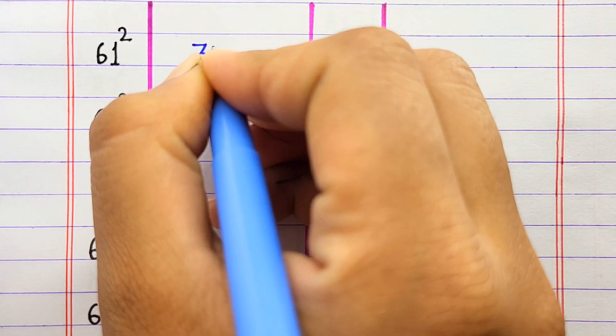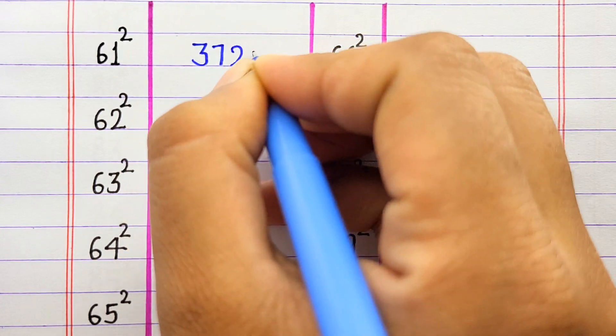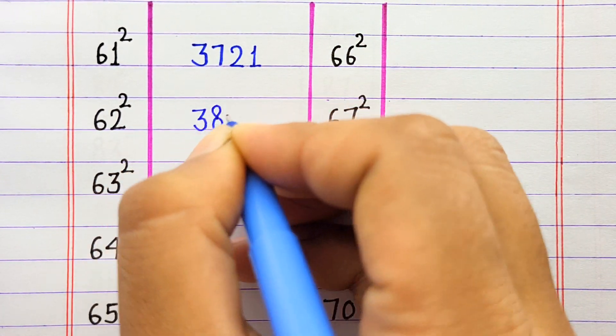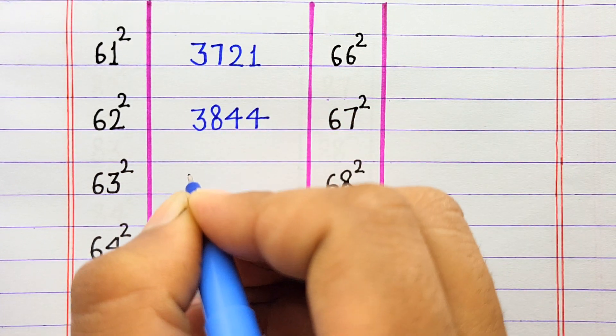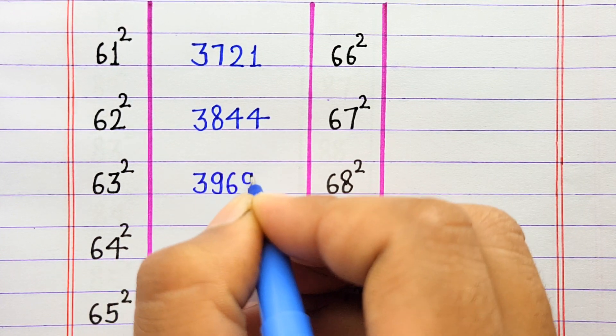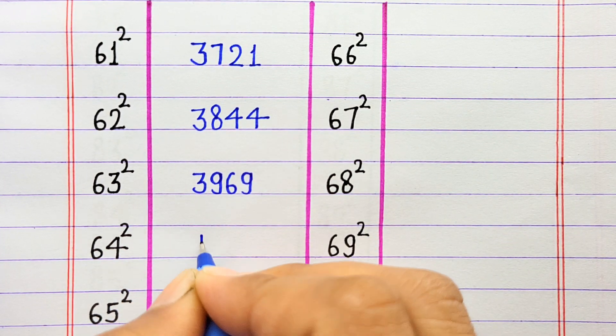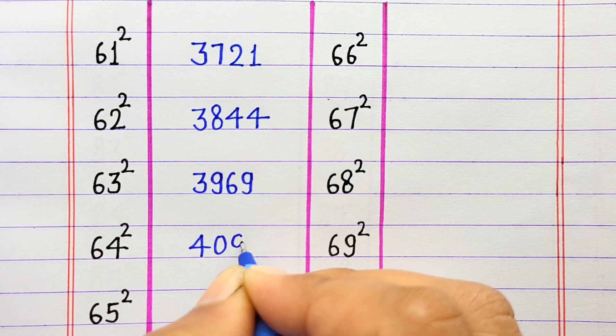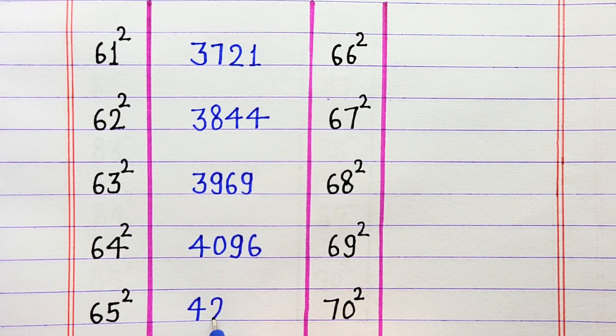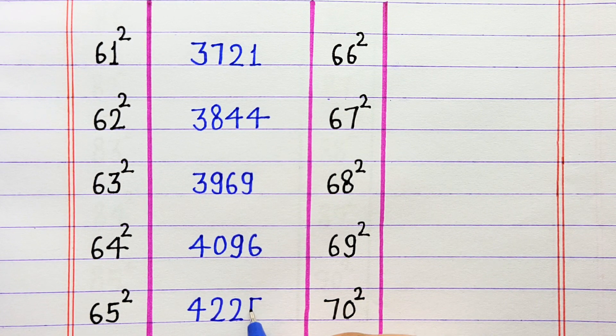61 ka square 3721, 62 ka square 3844, 63 ka square 3969, 64 ka square 4096, 65 ka square 4225.